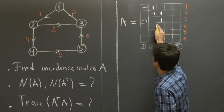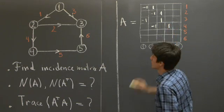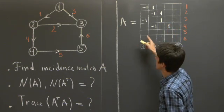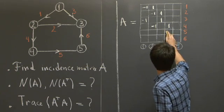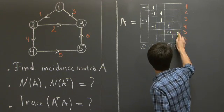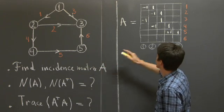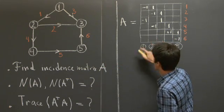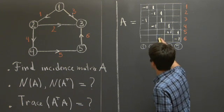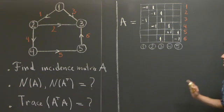4 is negative 2, negative 1, 1. 5 is negative 4, 1 here, and 6 is 1 and 1. OK, so we've constructed the matrix A.